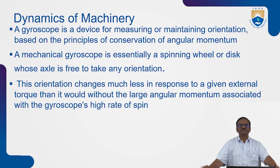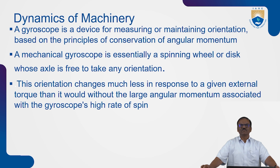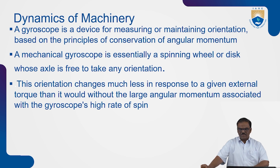A gyroscope is a device for measuring or maintaining orientation based on the principles of conservation of angular momentum. A mechanical gyroscope is essentially a spinning wheel or disc whose axle is free to take any orientation. This orientation changes much less in response to a given external torque than it would without the large angular momentum associated with the gyroscope's high rate of spin. We will see in the next slide how a mechanical gyroscope and its orientation will function.